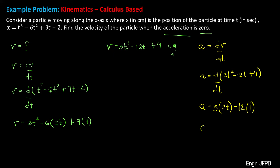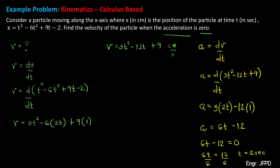We know the acceleration is 0, so: 6t minus 12 equals 0. Solving for t: 6t equals 12. Dividing both sides by 6 gives t equals 2 seconds. That means we want to solve for the velocity when time t equals 2 seconds.